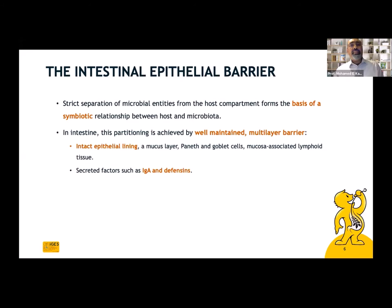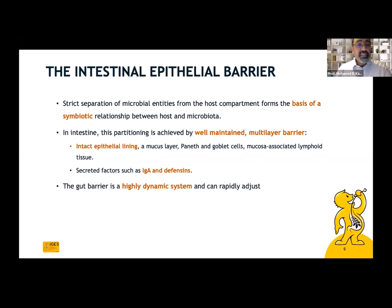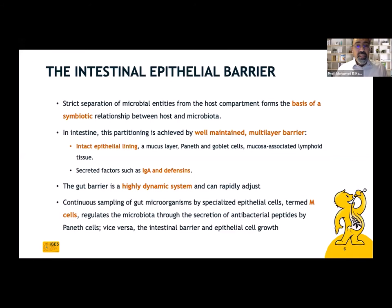The intestinal epithelial barrier: strict separation of microbial entities from the host compartment forms the basis of the symbiotic relationship between host and microbiota. This partitioning is achieved by well-maintained multi-layer barriers — the intact epithelial lining and secreted factors like IgA and defensins. The gut barrier is a highly dynamic system that can rapidly adjust. Continuous sampling of gut microorganisms by specialized epithelial cells called M cells regulates the microbiota through secretion of antibacterial peptides by Paneth cells.